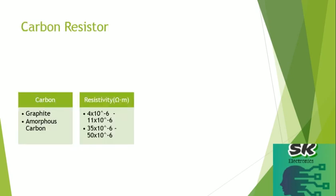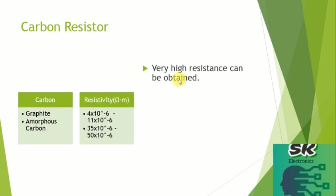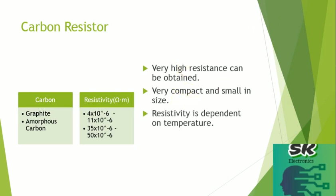After the limitations of alloys, carbon resistors came into existence, which are graphite or amorphous carbon. The advantage of using carbon resistors is that very high resistance can be achieved. Secondly, they are very small and compact in size. The limitation of resistivity is also omitted — under high temperature, the resistance does not change.